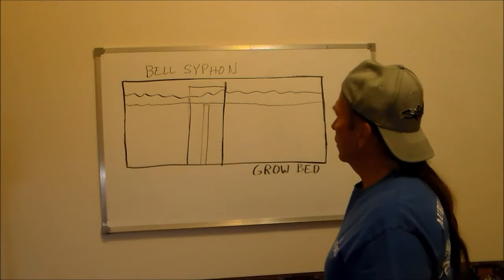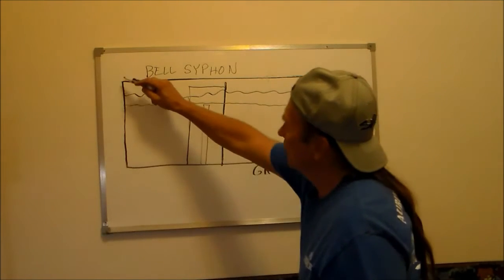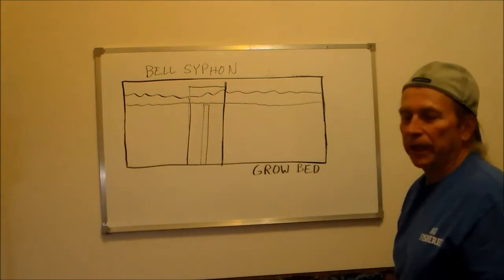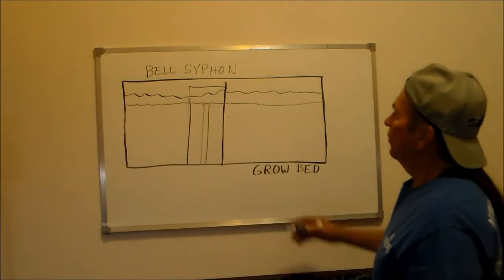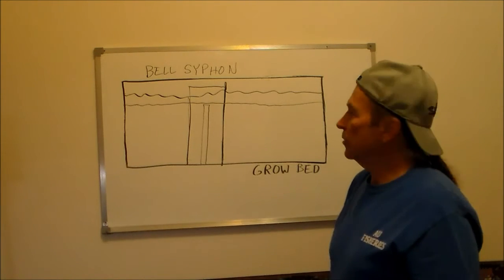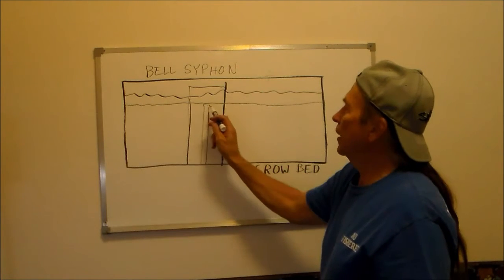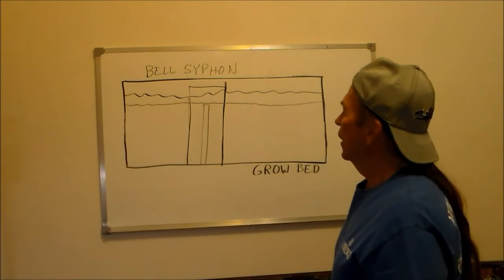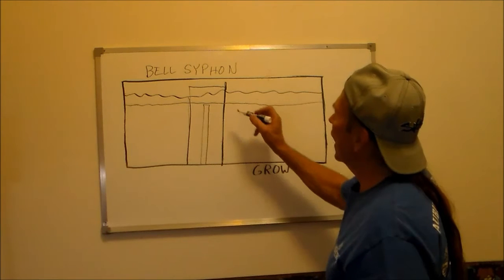My first grow beds, mine are barrels, so it'd be a half of a barrel. They're cut in half, so that's leaving about a 12 inch height total. So then I come down. These were set at 9 inches.